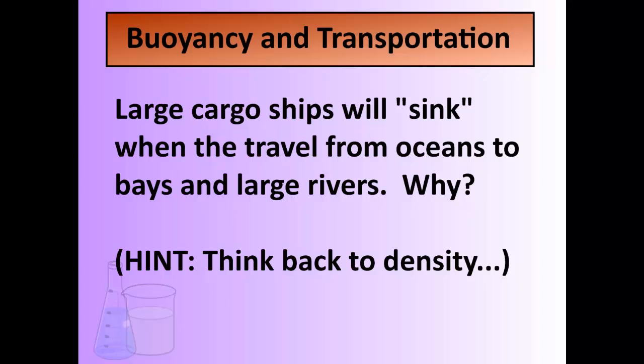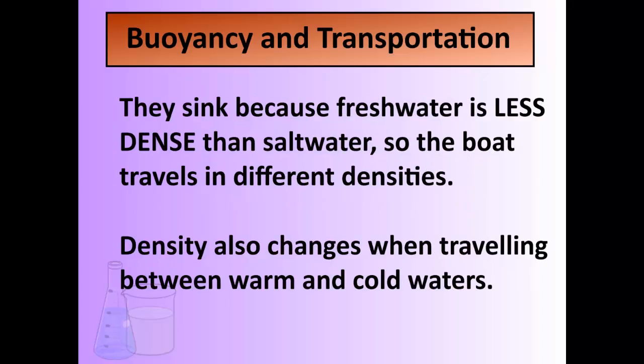We see this with large cargo ships. They actually sink a little bit when they travel from oceans to bays and large rivers. Why would a ship travel higher in one body of water and lower in another? Well, if we think back to density and salt water versus fresh water, ships sit lower because fresh water is less dense than salt water. So the boat actually travels at different heights in different water densities.